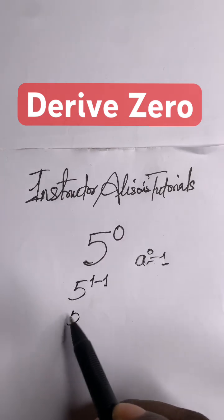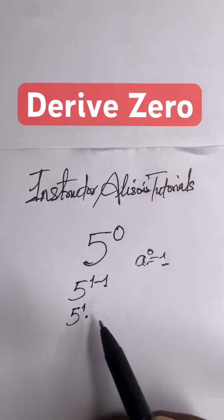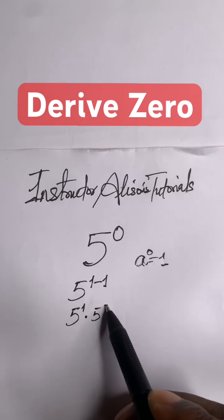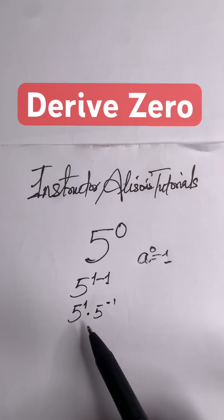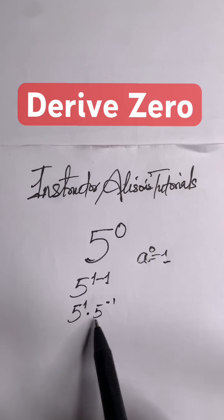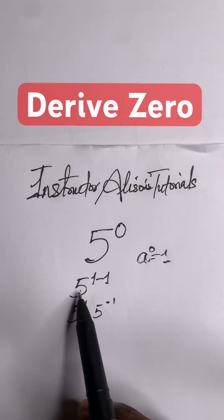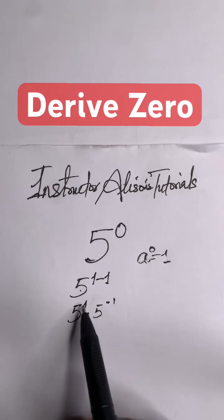You can split this using the product property, or product rule. The product rule states that when the bases are the same, you take the common base and add the powers.